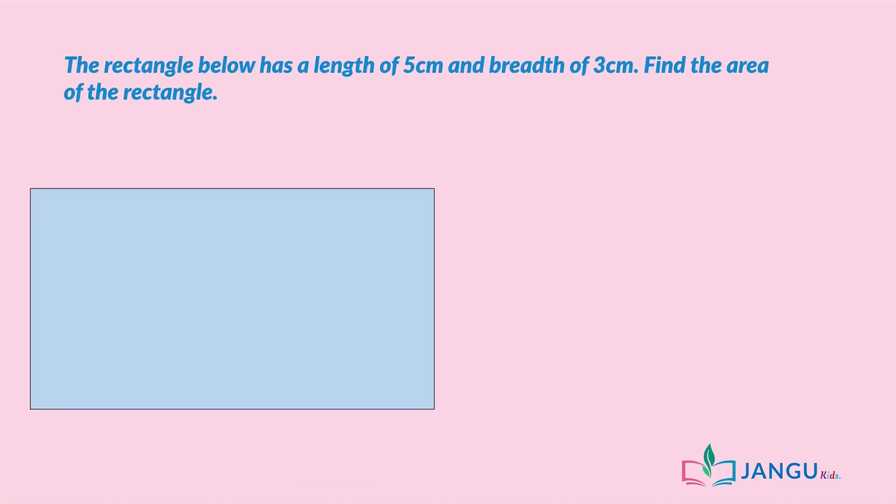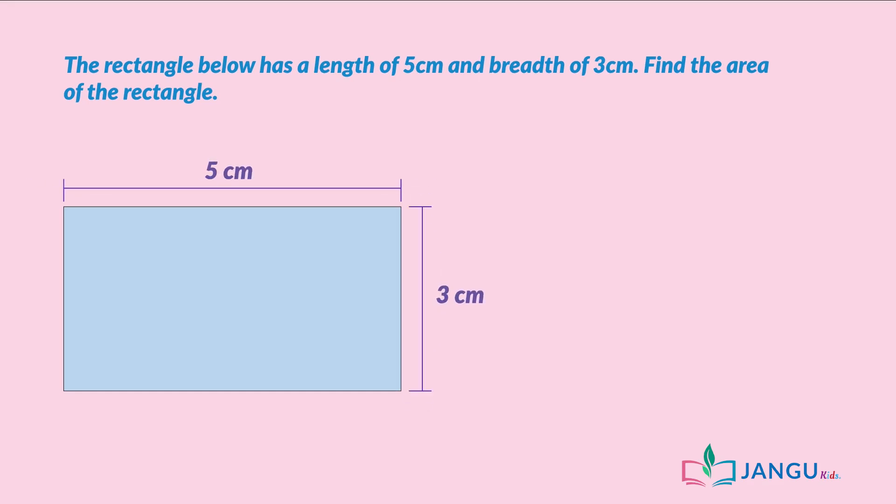The rectangle below has a length of 5 centimeters and a breadth of 3 centimeters. Find the area of the rectangle. The formula for finding the area of a rectangle is length times breadth. The length of the rectangle is 5 centimeters, while its breadth is 3 centimeters.